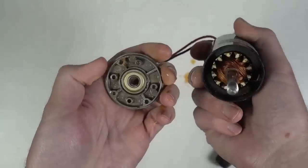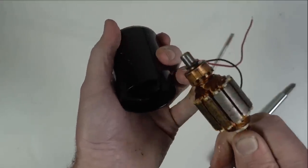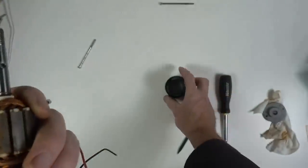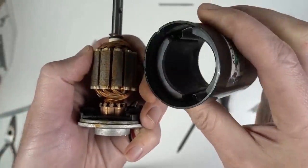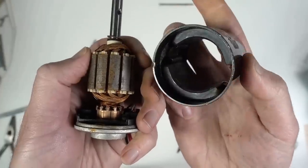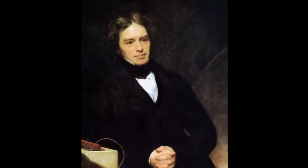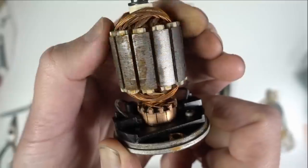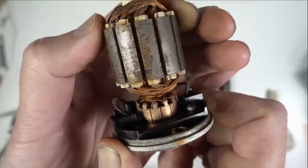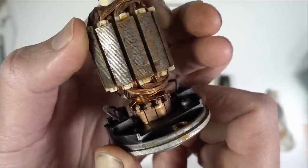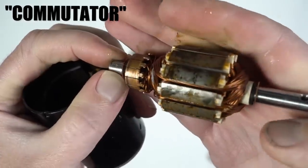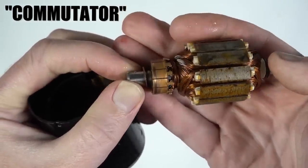Taking the generator apart we can see it's just a big version of the motors from part one. It makes electricity by spinning wires inside magnets. The magnets induce an electric current in the wires, an effect first identified by Michael Faraday in the early 1800s. We can't connect directly to wires that are spinning, so the generator has brushes that ride on copper contacts called a commutator.